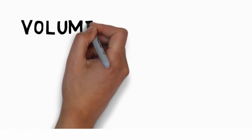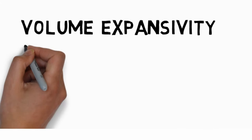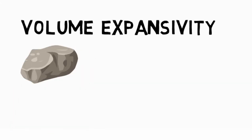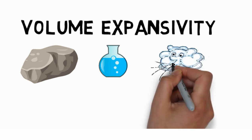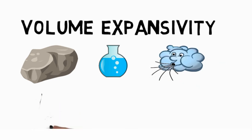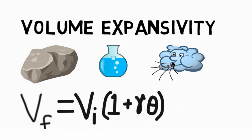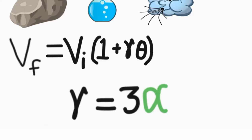Now expansivity or more technically volume expansivity is the fractional increase in volume of a solid, liquid or gas per unit rise in temperature. That is Vf equals Vi into 1 plus gamma theta where gamma is a cubic expansivity which is equal to 3 alpha. Alpha here being the coefficient of thermal expansion.